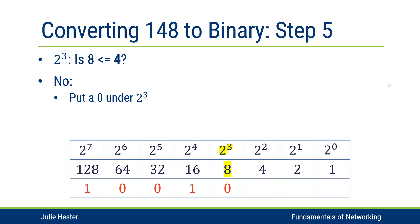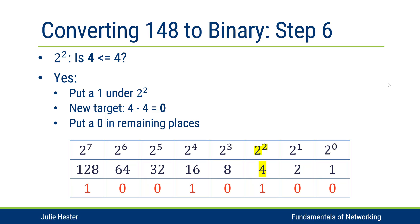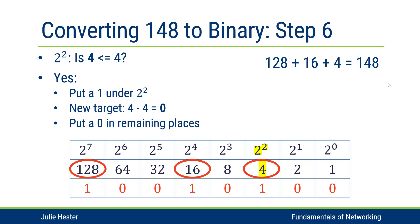Moving on to two to the third: is eight less than or equal to four? It is not, so I'll put a zero in that column. Then, is four — two squared — less than or equal to four? In this case that's equivalent to my target, so I put a one under two squared. I've used up my entire target; four minus four is zero, so I put a zero in the remaining places. One hundred and forty-eight is equivalent to binary one zero zero one zero one zero zero. To check myself, I can add up 128 plus 16 plus 4, and I get 148, which proves I got the correct answer.